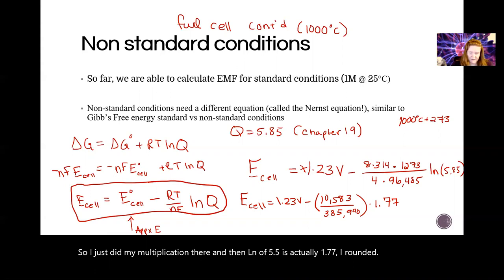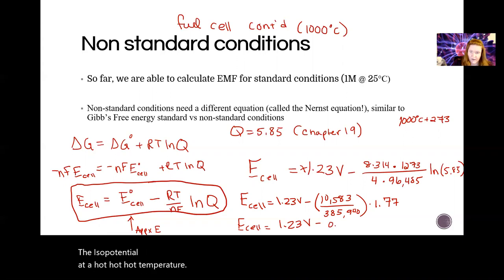And then ln of 5.85 is actually 1.77. I rounded. I'm keeping all the significant figures in my calculator when I do this, but I'll round when I write it down. So the E cell potential at a hot, hot, hot temperature is going to be lower. Not a lot lower, but enough. A little lower, you know. So our final answer is 1.18 volts.